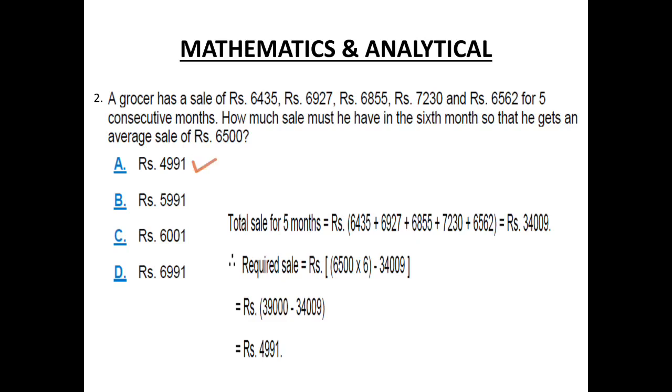After all sale, we want the 6th month sale. We are going to multiply the average by the total number of months. So 6500 will be multiplied by 6 and out of that we are going to subtract the total sale for 5 months which is 34009. When you subtract it out, you will get the answer as Rs. 4991 which is option A.